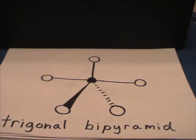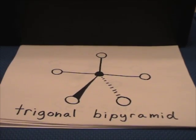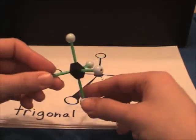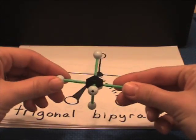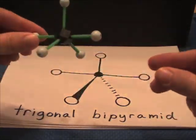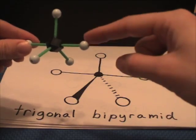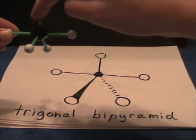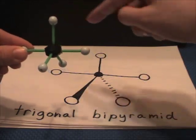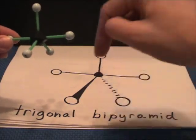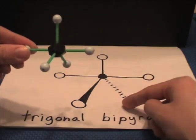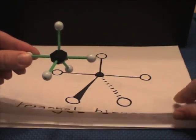If you have five electron densities, this is called the trigonal bipyramid. Notice that these three atoms are on the same plane — drawn with regular lines. But this bond is coming towards me and this bond is going away, so we have a trigonal bipyramid.